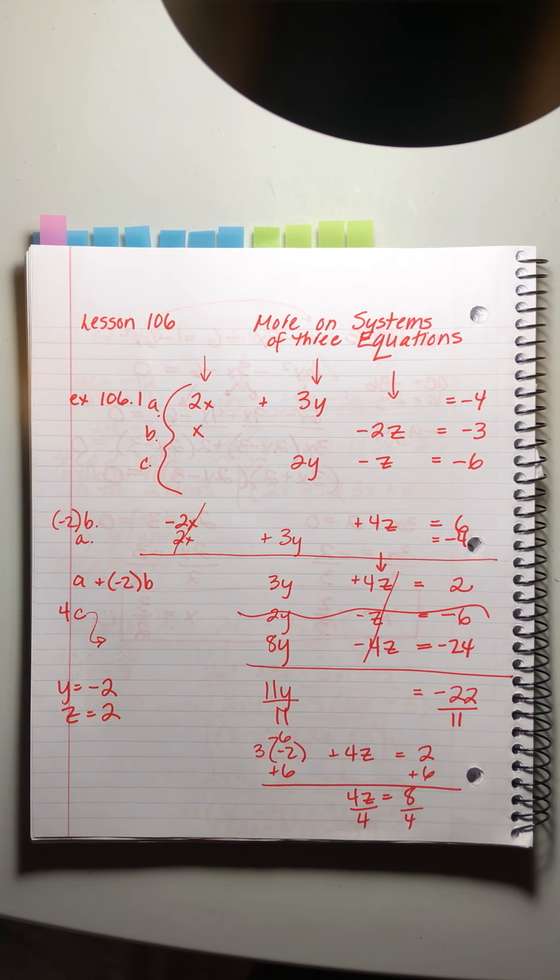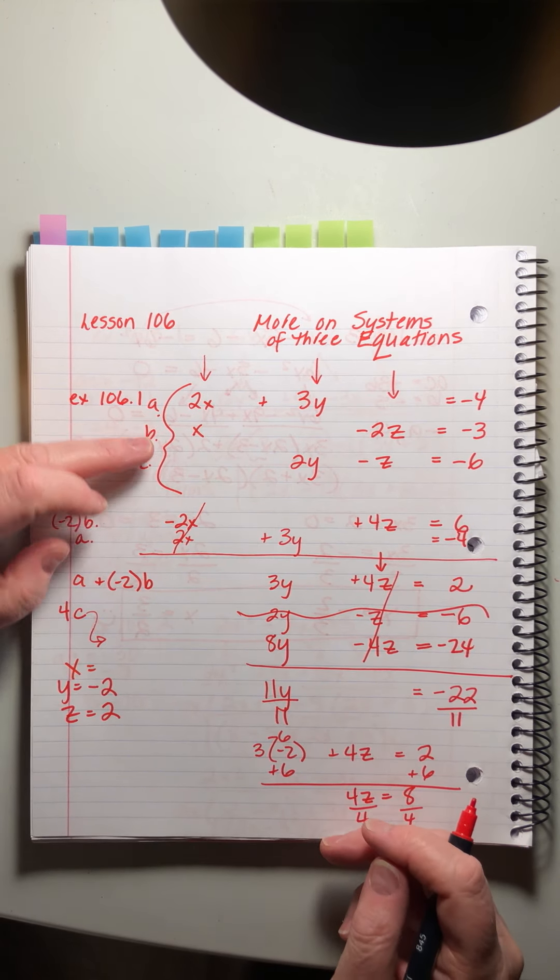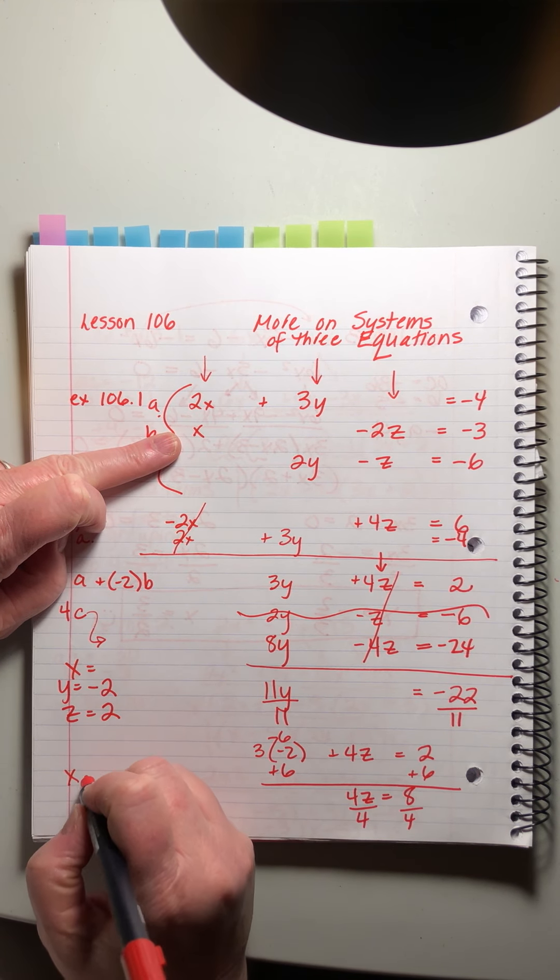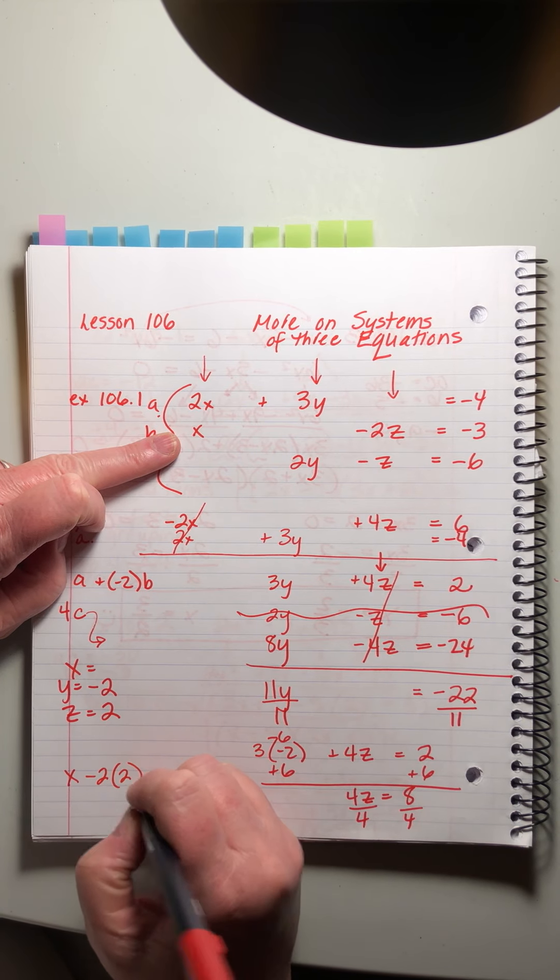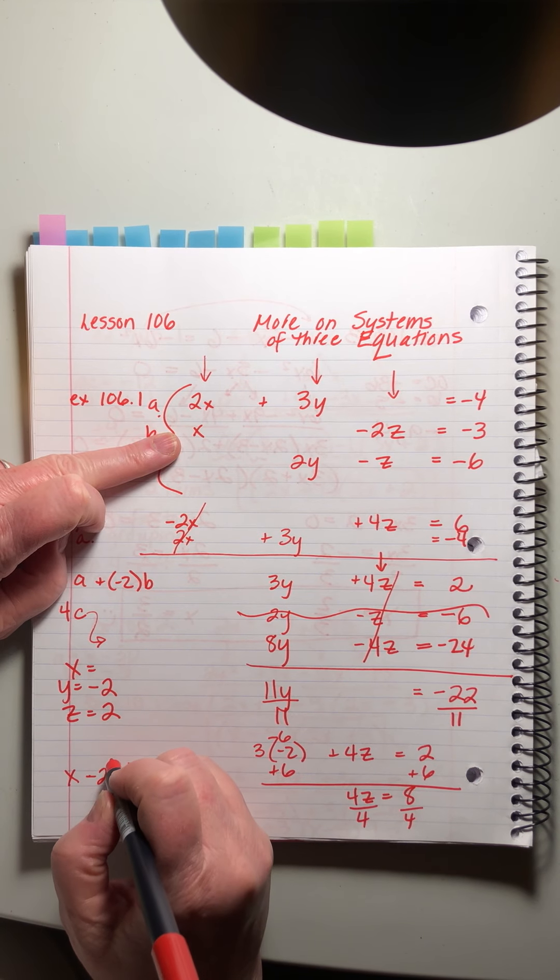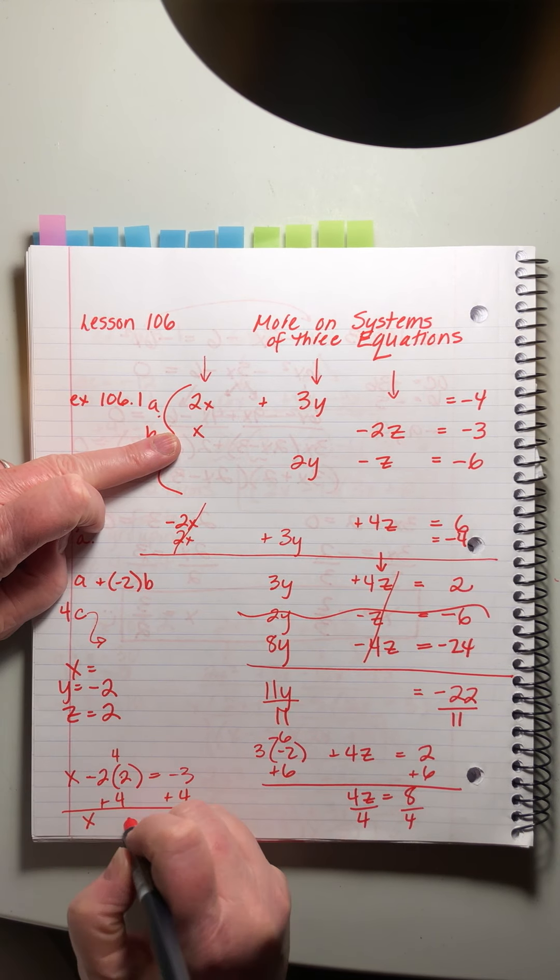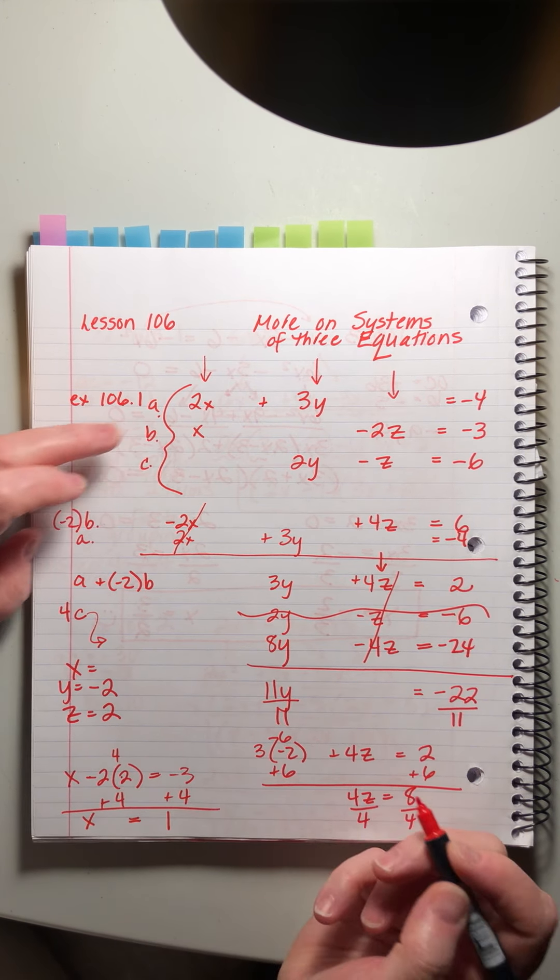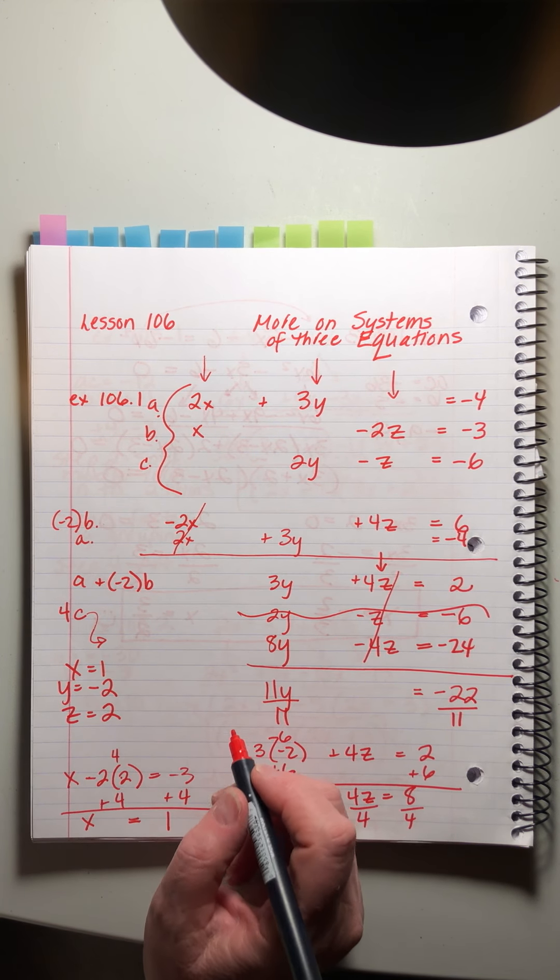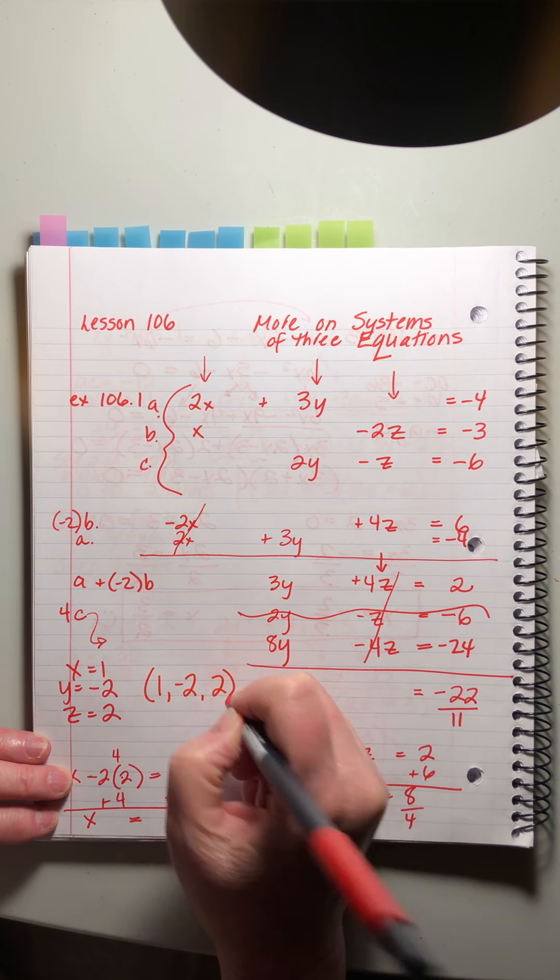And now our final step we have to solve for x. So I got to go back up here and look at my list. Oh this is pretty easy. I can probably do this one. x minus 2z. Z is 2 equals minus 3. That's 4. So if I add 4 x equals 1. There it is. Let me make sure I got it right before I gloat too much. Yes. And we can write it as an ordered triple. 1 minus 2 positive 2. Make sure you get it in the right order.